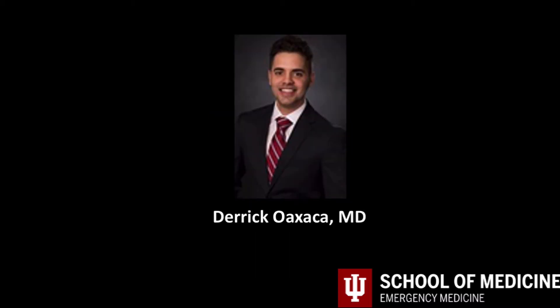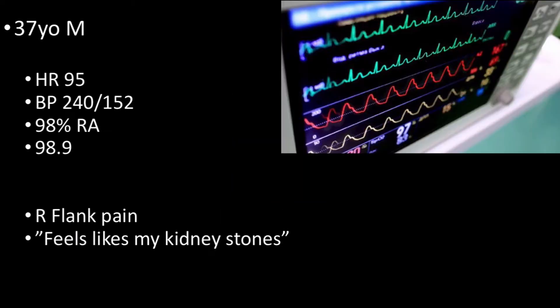This case was evaluated in the emergency department by Dr. Derek Oaxaca and his attending. A 37-year-old male presented to the emergency department by medic secondary to severe right flank pain. He reports this started soon after straining to have a bowel movement. His history is significant for kidney stones and he said his symptoms were consistent with his kidney stone pain. His vitals were remarkable for an extremely elevated blood pressure of 240 over 152, yet he was in significant pain and reported being non-compliant with his hypertensive medications. On physical exam, the patient was in moderate distress and appeared unable to get comfortable. He did have tenderness to percussion of the right flank with an otherwise benign abdominal examination.